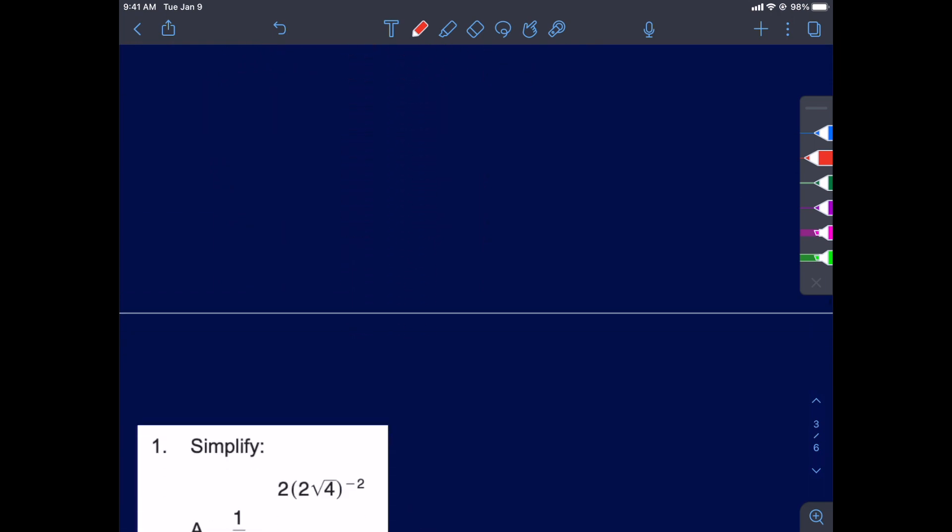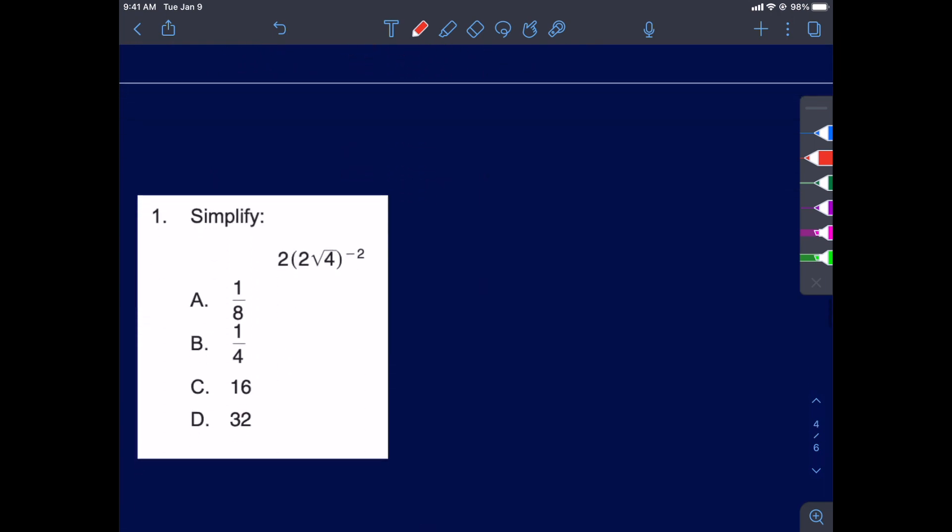Number 3. Simplify. We got an expression with a square root and a negative exponent. There might be harder examples than this, but let's see what we can do. Let's work from the inside out if we can. Square root of 4, well that is just 2. So before we get to that negative exponent, I'm going to put the 2 here and put 4, 2 times 2, to the negative 2 power.